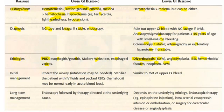What is the initial management of upper GI bleed? First, protect the airway — intubation may be needed. Stabilize the patient with IV fluids and packed RBCs. Note that hematocrit may be normal early in acute blood loss. The initial management is the same for both upper and lower GI bleed.